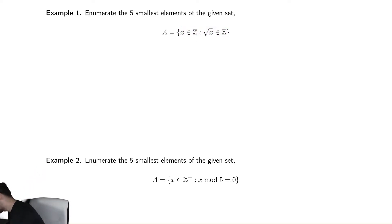So let's think of numbers where their square root is also an integer. Here's an example: zero is an integer, and radical zero, which is just zero, is also an integer.